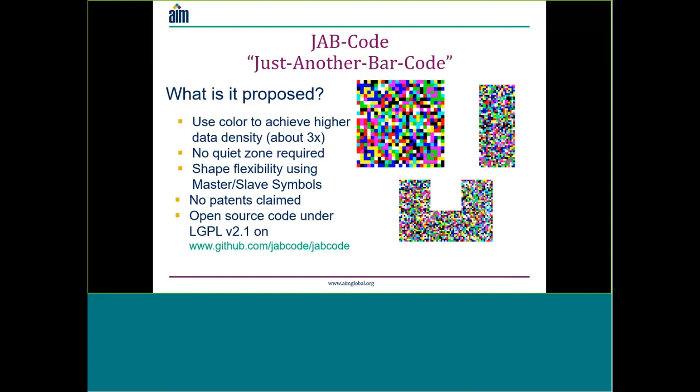JAB Code uses a single master symbol containing all the information, along with slave symbols — each attached symbol gives information about where the next symbol is. There are no patents claimed and, as far as WG1 knows, all technology in JAB Code is covered by patents that have long expired. It is believed to be fully in the public domain, and open source code for encoding and decoding is being made available by the inventors.